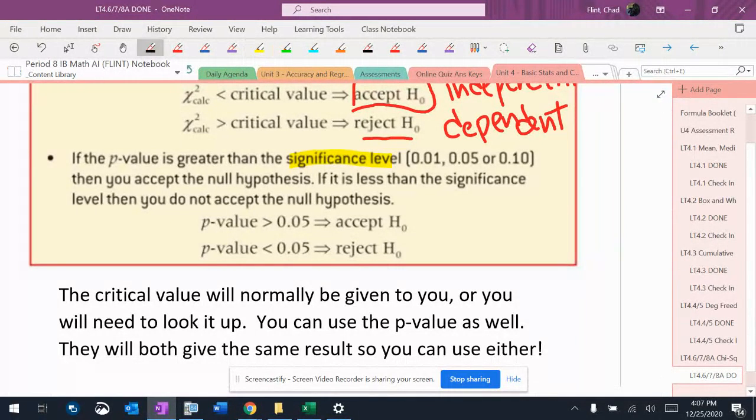If your p-value comes out to be greater than the significance level, you would accept the null hypothesis, and it would be independent.